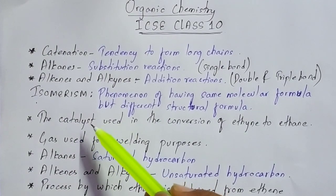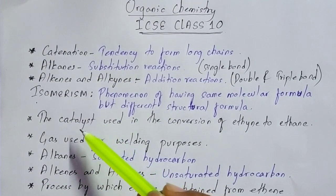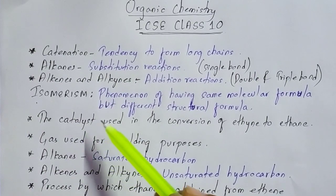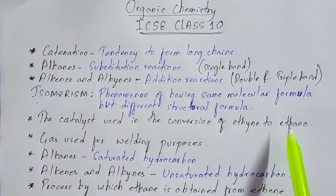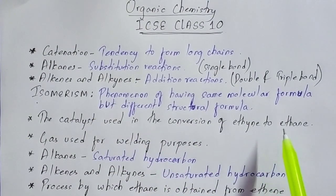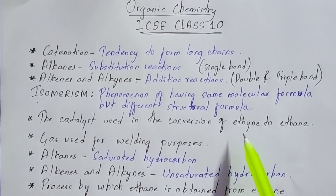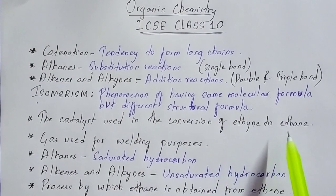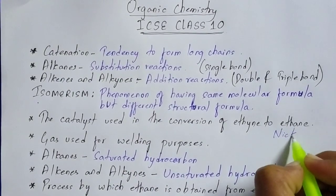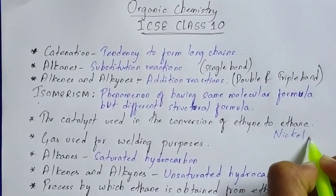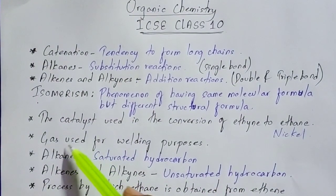This is a question which is asked most of the time from organic chemistry: name the catalyst that is used in the conversion of ethine to ethane. The catalyst used in the conversion of ethine to ethane is nickel.